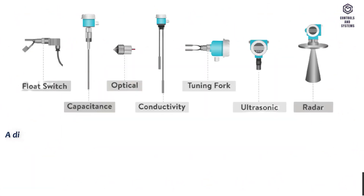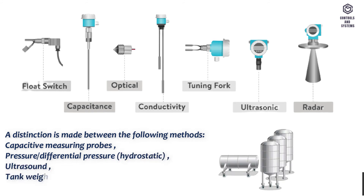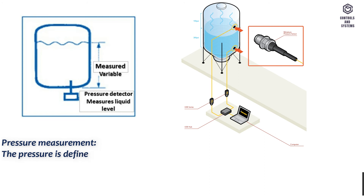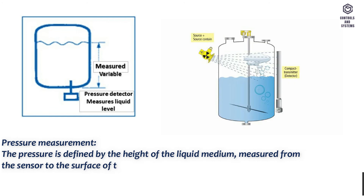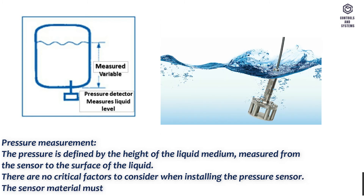For liquid level sensing, a distinction is made between the following methods: capacitive measuring probes, pressure or differential pressure (hydrostatic), ultrasound, tank weighing systems, and electromechanical sensing. For pressure measurement, pressure is defined by the height of the liquid medium measured from the sensor to the surface of the liquid. There are no critical factors to consider when installing the pressure sensor, but the sensor material must be suitable for use with the liquid medium.